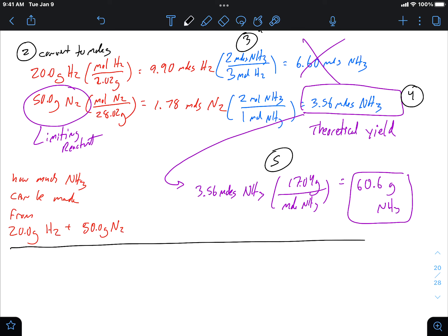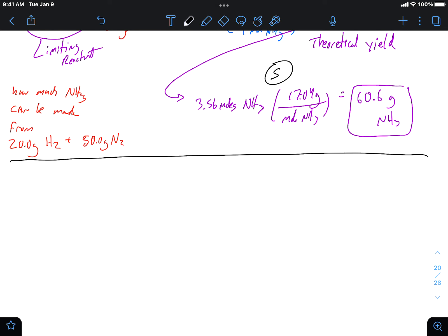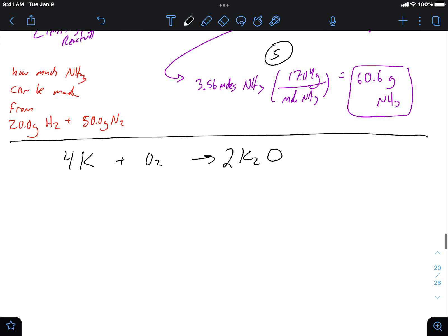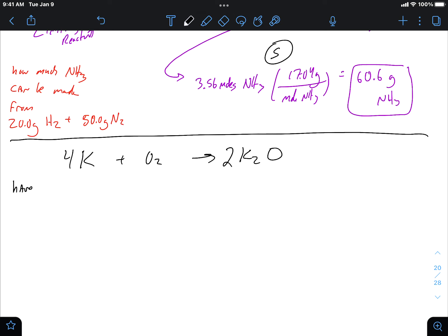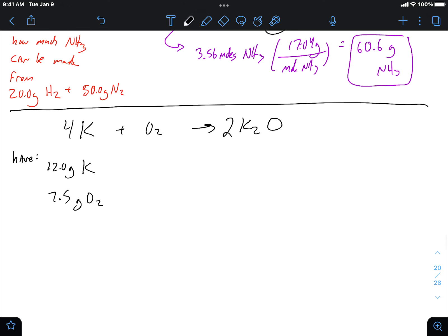The steps to these limiting reactant problems are pretty much always the same. Let me give you one and see what you come up with. We have 12 grams of potassium and we have 7.5 grams of oxygen. I want to know how much of the product can be made and which one of the reactants ran out first. Follow the steps that we just outlined and we'll see what we come up with.